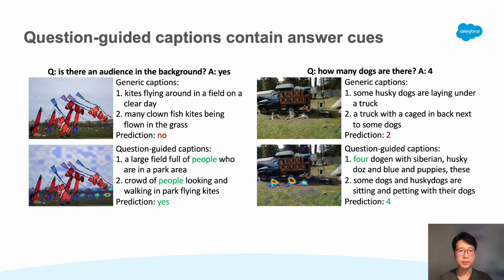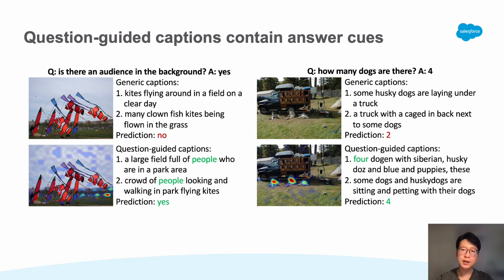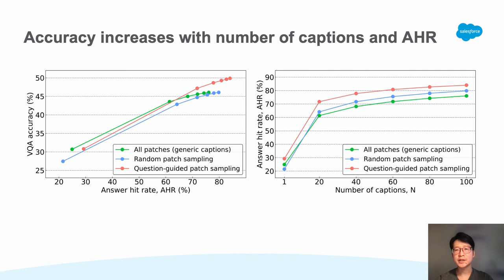Here are some qualitative examples comparing question-guided captions and generic captions. We show the original images and images with heat maps. The heat map shows that GradCAM can highlight the important portions of the image relevant to the question, even when it might not be obvious. The generated question-guided captions can contain answer cues that are helpful for question answering. To measure quantitatively how informative question-guided captions are, we compute the answer hit rate, defined as the frequency of questions for which the ground truth answer appears in the generated captions. The figure shows that accuracy increases with answer hit rate and number of captions, supporting PNP-VQA's design of utilizing multiple question-guided captions to cover diverse and relevant visual content.